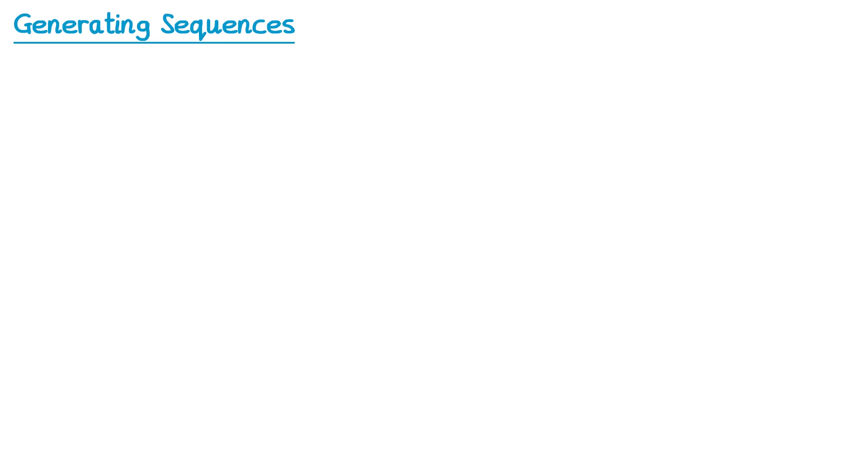Sometimes we use algebra to describe a sequence, for example 4n. We use the letter n for this and we call it an nth term. We can use the nth term to generate the terms of a sequence. To do this we substitute n for different numbers.